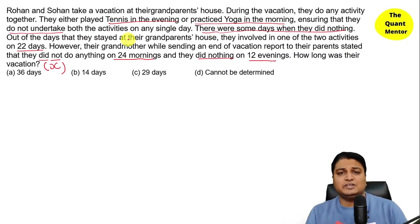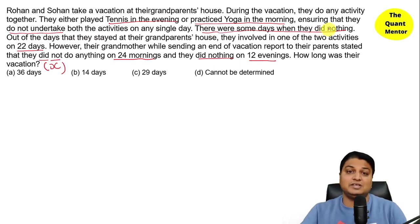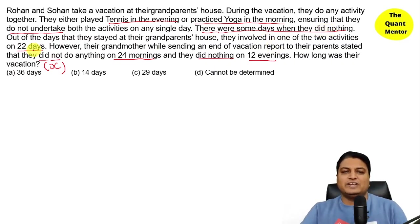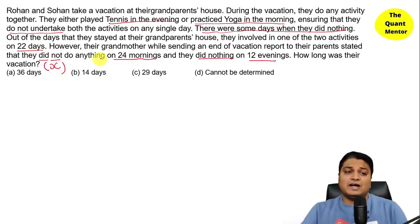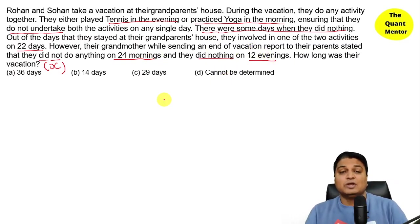They ensure that they do not take both activities on any single day — there is no more than one activity per day. There were some days when they did not do anything. They were active on 22 days total. Their grandmother said that 24 mornings were like that when they did not do anything, and 12 evenings were like that when they did not do anything.